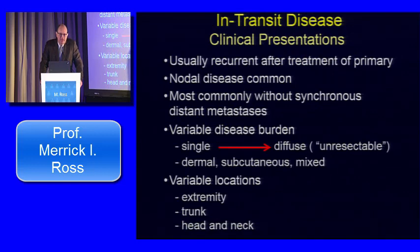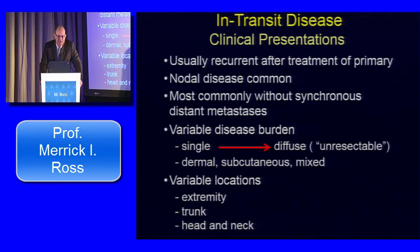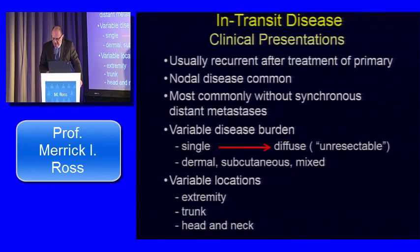From a clinical presentation standpoint, most intransit disease is recurrent after treatment of the primary, though synchronous advanced primary and intransit disease can occur simultaneously. Associated nodal disease is common either before or after. Most commonly, patients present without apparent distant synchronous metastatic disease, and disease burden is variable from single sites to diffuse. Lesions could be dermal-based, subcutaneous-based, or mixed, with variable locations — extremity is most common, particularly the lower extremity, though trunk and head and neck also occur.